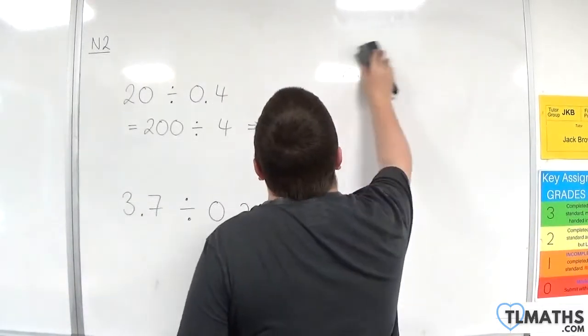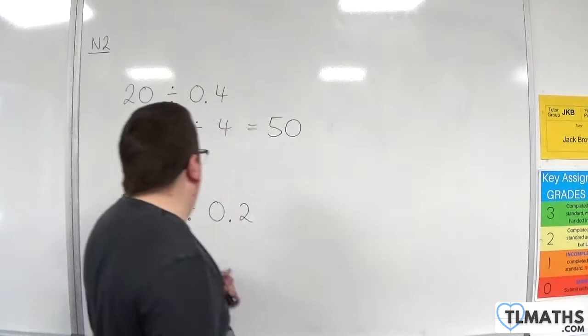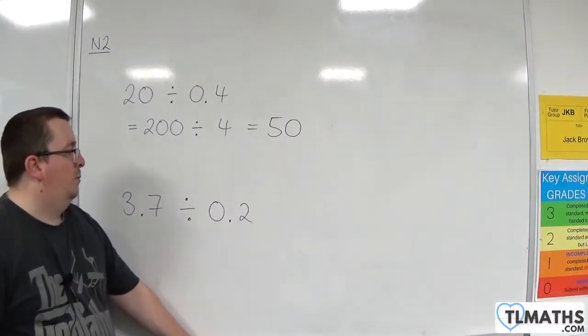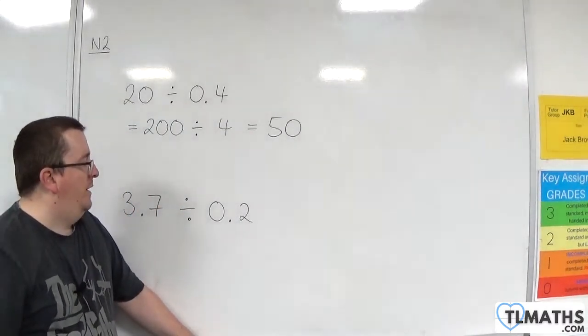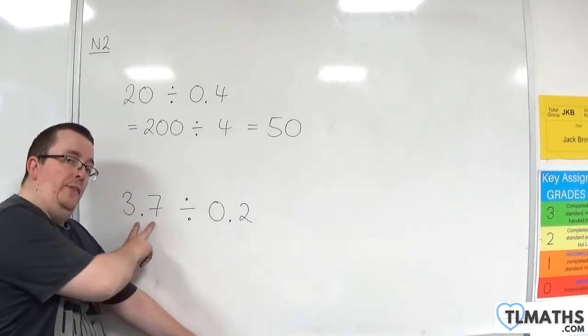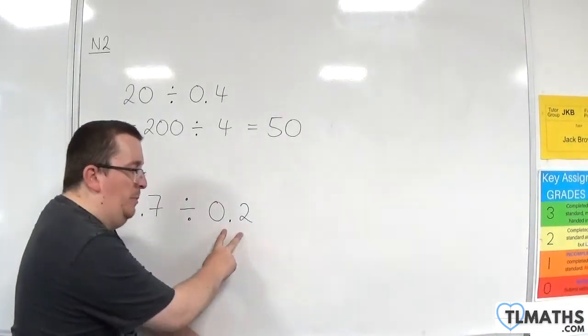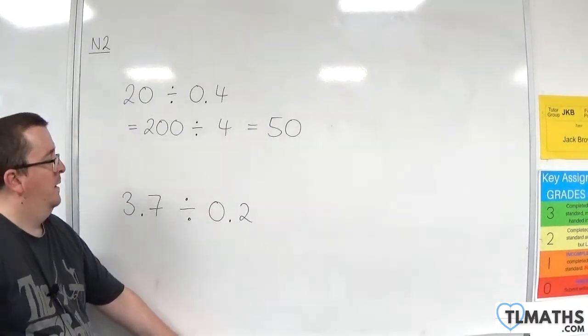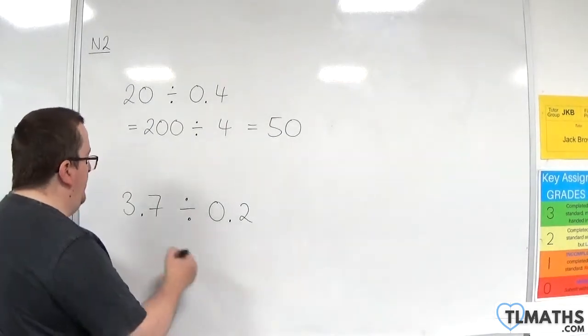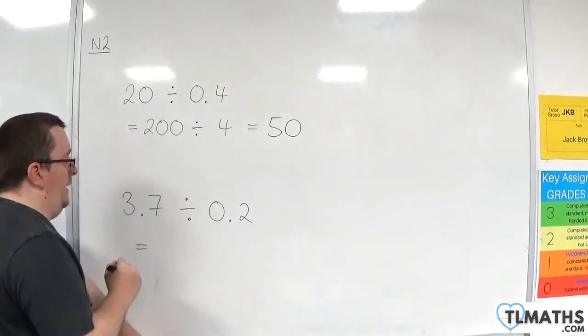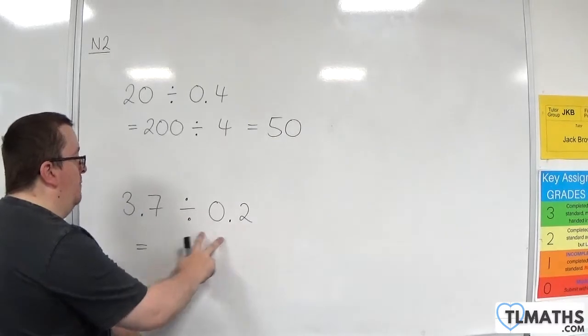That means that for our second example, 3.7 divided by 0.2, we should end up with an answer larger than 3.7 because we're dividing by a number between 0 and 1. So, before we do any division, we fix it by multiplying both of them by 10.